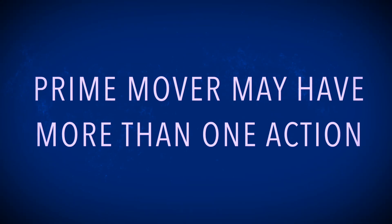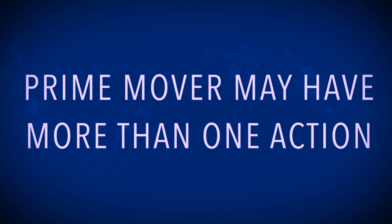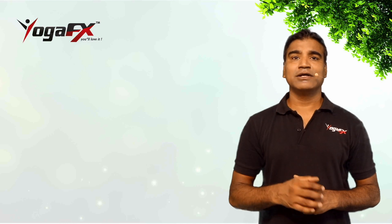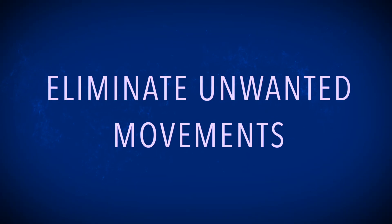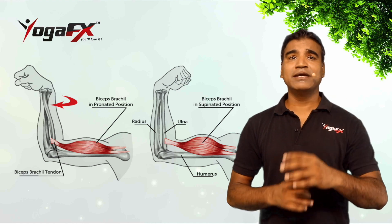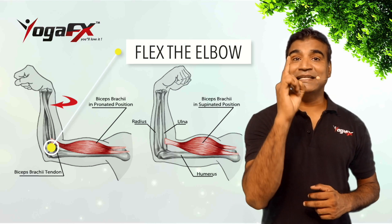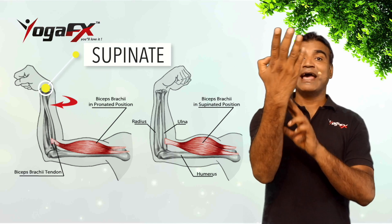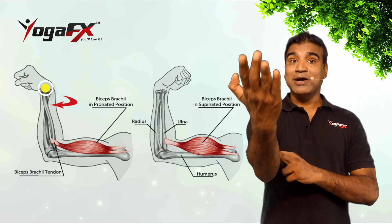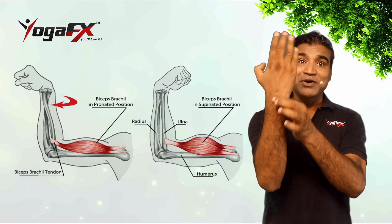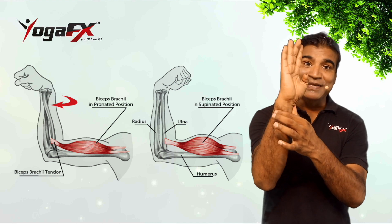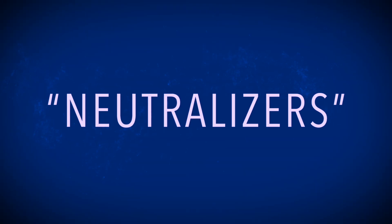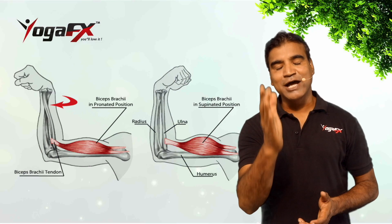A prime mover may have more than one action at the same time or at another joint. So synergists also act to eliminate unwanted movements. For example, the bicep brachii will flex the elbow, but its line of pull will also supinate the forearm — that is, twisting the forearm as when tightening a screw. If you want flexion to occur without supination, other muscles must contract to prevent this supination. In this context, such synergists are sometimes called neutralizers, counterbalancing the unwanted movements.